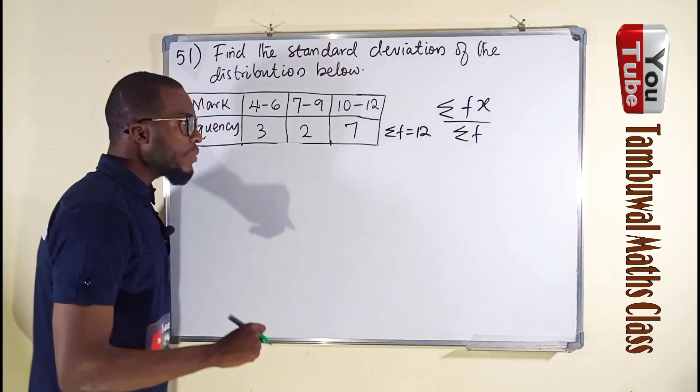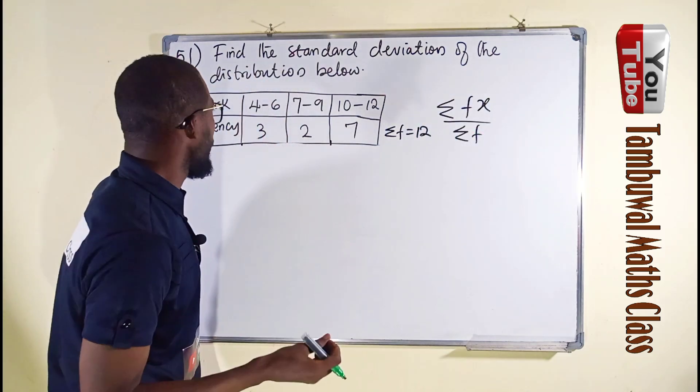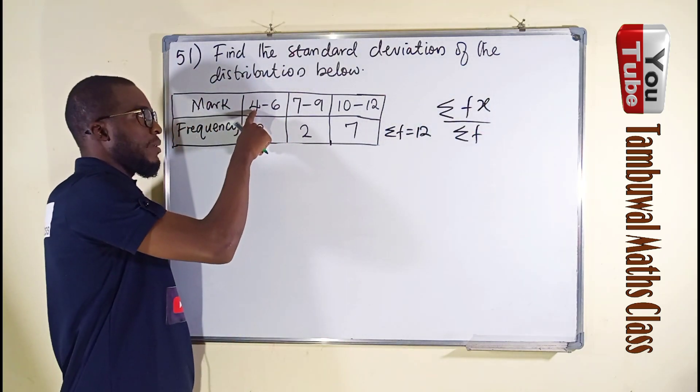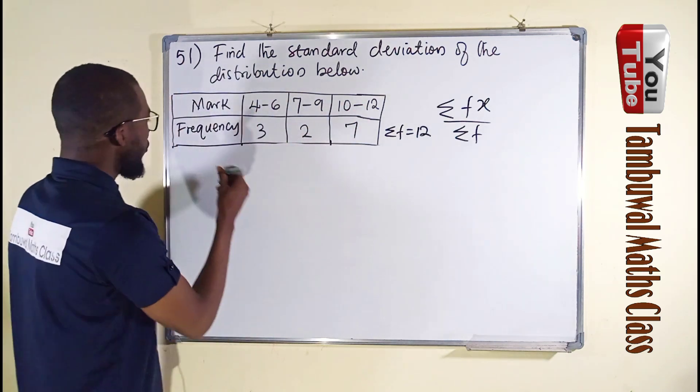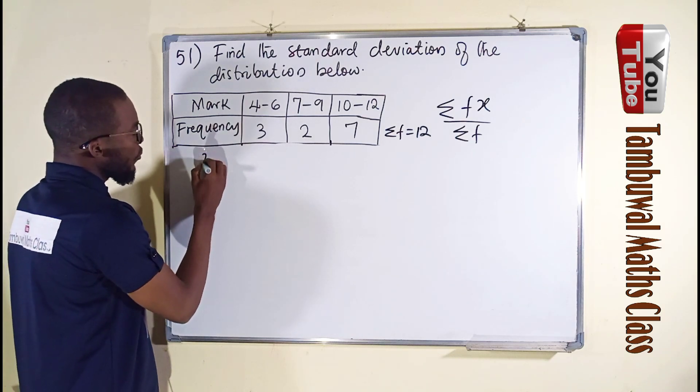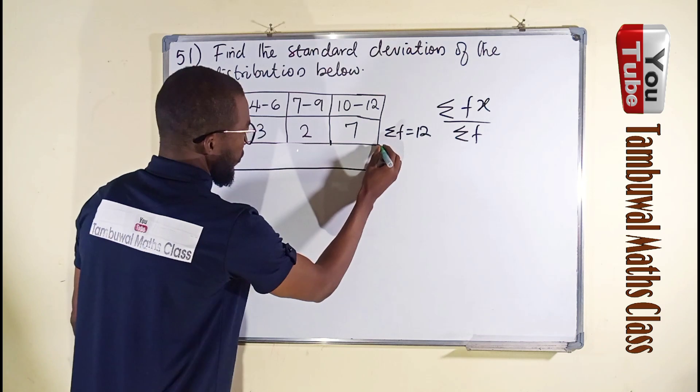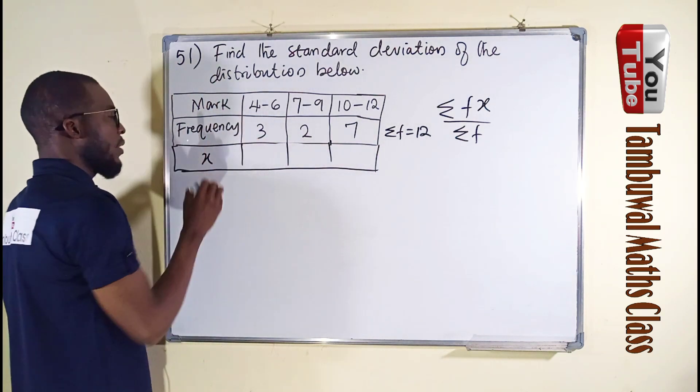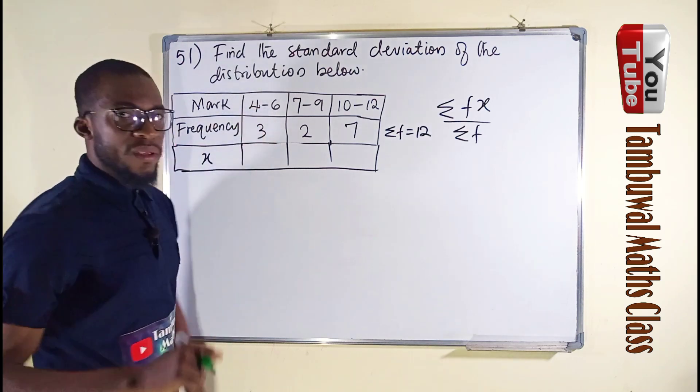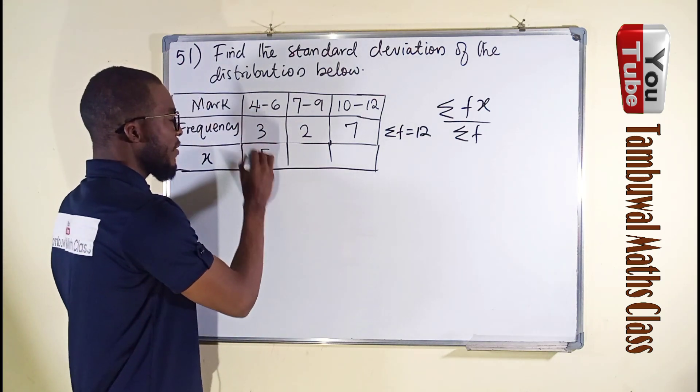But we don't know this x. This x is the midpoint, the mid mark between this range of marks. You add them together, you divide by 2. So let us form a row of this x, which are the midpoints. 4 plus 6 is 10, divided by 2 is 5, we write 5 here.